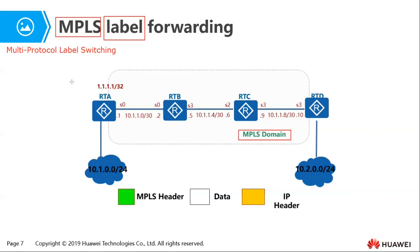Because with current processing power, routers can forward as fast using the IP header as they can using MPLS. Other benefits of MPLS include support for traffic engineering, improved quality of service, and optimized network services.